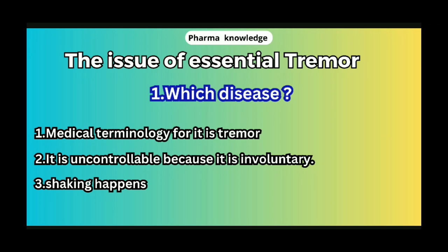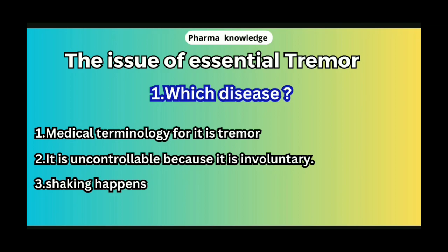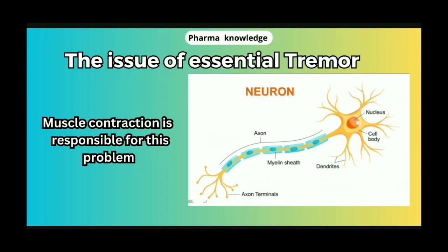First, if you have a medical terminal condition, you will call it Tremors. What is this? It is an involuntary process — the hand shake is done automatically. It is a problem with patients; it is done automatically with the nervous system and nervous disorder. We call it Tremors.